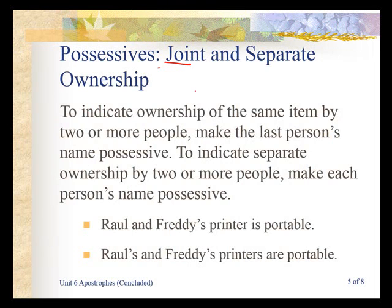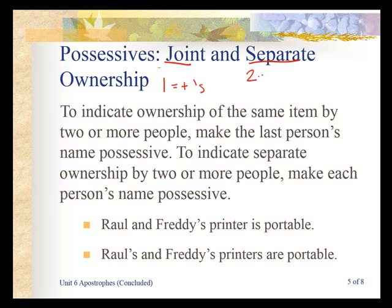Now we're going to talk about joint and separate ownership. If something has joint ownership, then they share ownership of something, and they'll also share how they show that ownership — possession is shown only on the last name listed. If they have separate ownership, they'll each show possession individually. We still follow the same rule: singular gets apostrophe s; plural ending in s gets apostrophe only; plural ending in other than s gets apostrophe s.